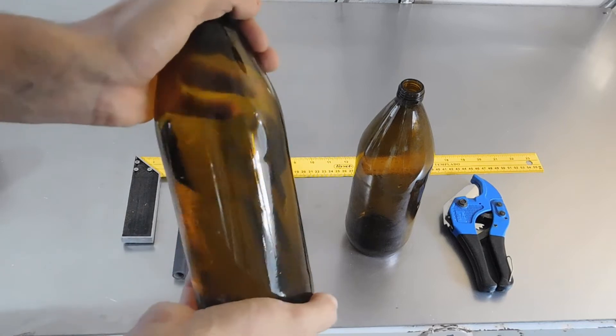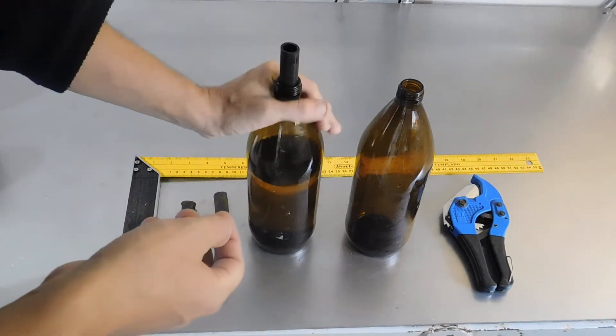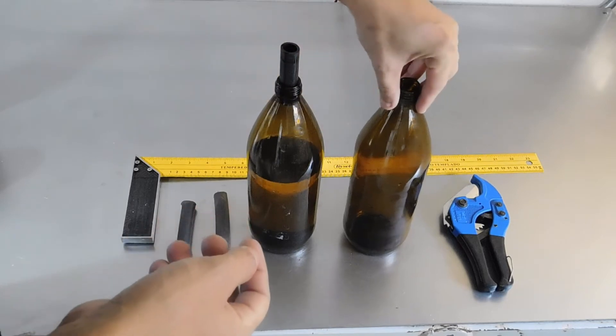Si queremos un agua de calidad para beber, siempre lo ideal es el vidrio. En este caso vamos a necesitar dos envases de vidrio, que tienen que ser iguales.